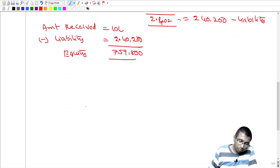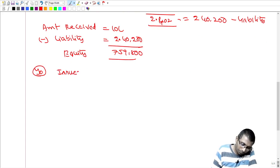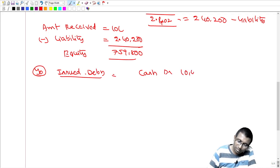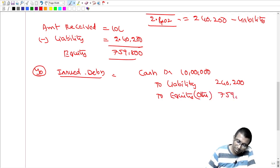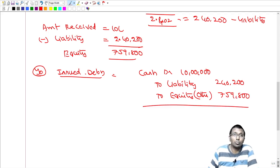On day one, when the debentures are issued, the journal entry is: Cash Account debit 10 lakh rupees; Liability credit 2,40,200 rupees — which is the obligation to pay interest; and Equity (other equity) credit 7,59,800 rupees. This is the first journal entry to pass.